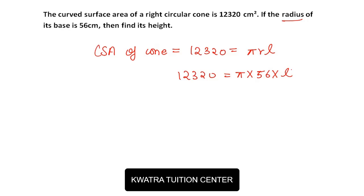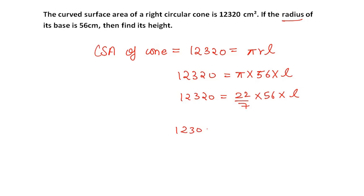We need to find the value of l so that we can then find the height. We have 12,320 = (22/7) × 56 × l, where l is unknown. Cross-multiplying all the values gives us the value of l, which comes out to be 70 centimeters.